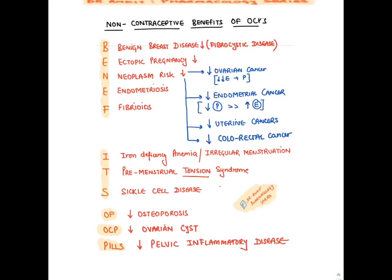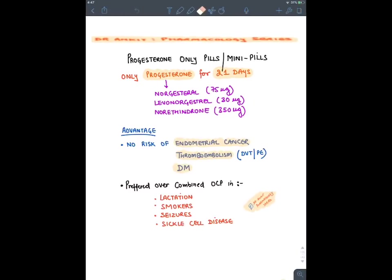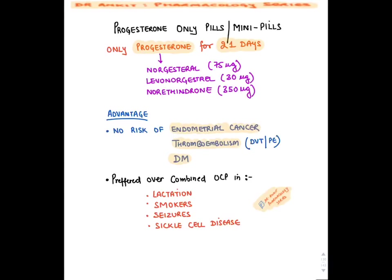Non-contraceptive benefits of OCPs include: good for fibrocystic benign breast disease, reduces ectopic pregnancy risk, reduces risk of ovarian cancer and endometrial cancer (progesterone effect outweighs estrogen's risk), reduces uterine and colorectal cancer risk, good for iron deficiency anemia (suppresses irregular menstruation), drug of choice for premenstrual tension syndrome, decreases osteoporosis risk, reduces ovarian cysts, and decreases pelvic inflammatory disease risk.